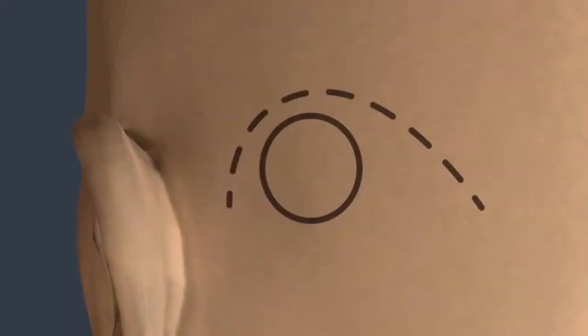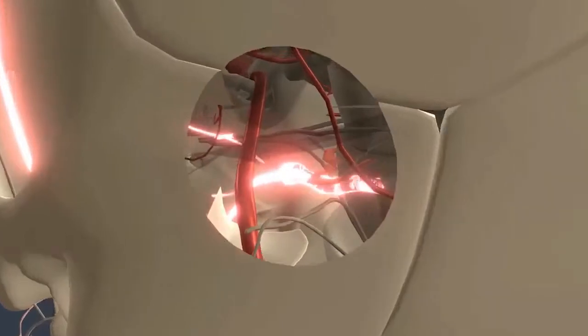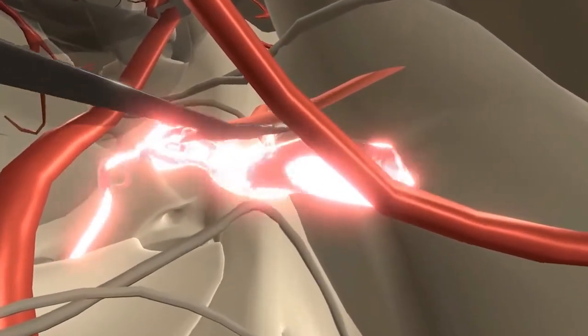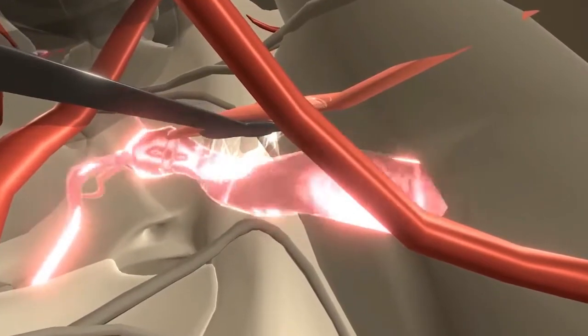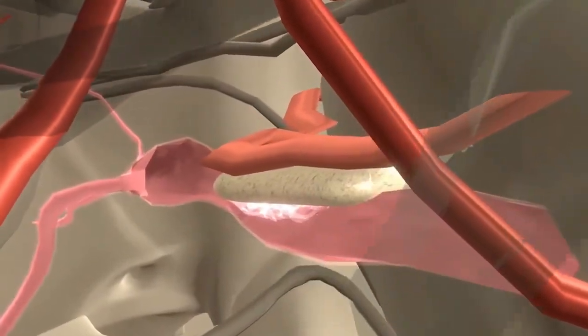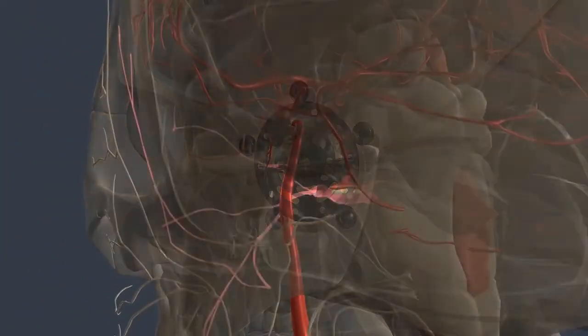In an operation called microvascular decompression, surgeons create an opening just behind the ear and use a microscope to locate the trigeminal nerve nearest origin on the brain stem. The offending blood vessel is moved away from the nerve, and a small Teflon sponge is placed between these two structures. In most instances, this procedure results in substantial pain reduction or even cure.